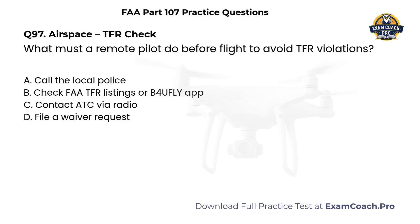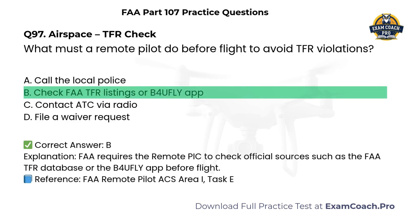What must a remote PIC do before flight to avoid temporary flight restriction violations? A. Call the local police. B. Check FAA TFR listings or the Before You Fly app. C. Contact ATC via radio. D. File a waiver request. Correct answer: B. FAA requires the remote PIC to check official sources such as the FAA TFR database or the Before You Fly app before flight.